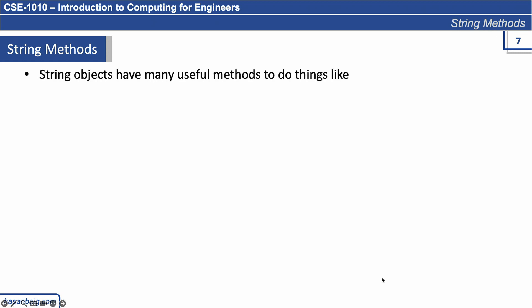String objects have many useful methods to do things like replacing characters, converting to lowercase. These are very common tasks. If you use Microsoft Word, you can select a string or paragraph and change it to lowercase or uppercase. These simple methods have already been incorporated in Microsoft Word.